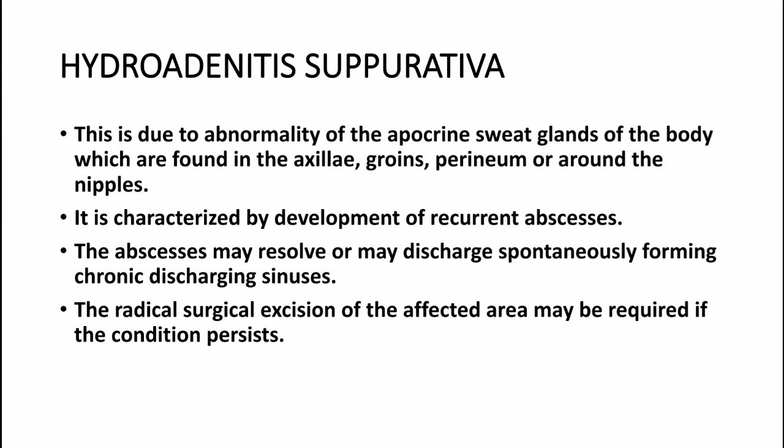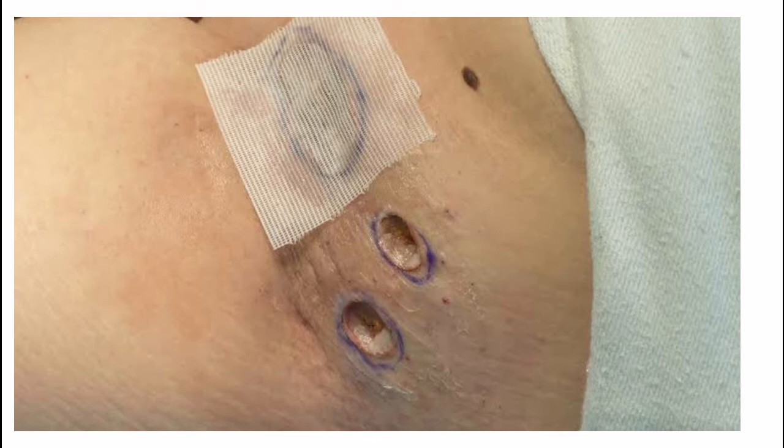Hidradenitis suppurativa is due to abnormality of the apocrine sweat glands found in the axillae, groins, perineum, or around the nipples. It is characterized by recurrent abscesses which may resolve or discharge spontaneously, forming chronic discharging sinuses. Radical surgical excision of the affected area may be required if the condition persists.